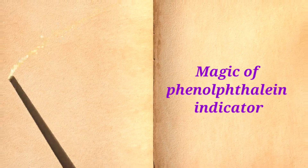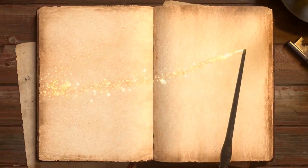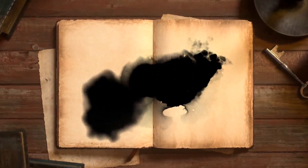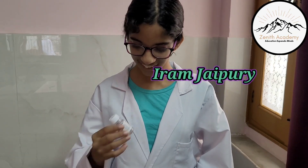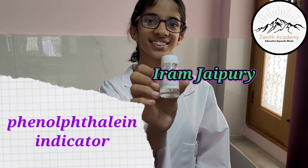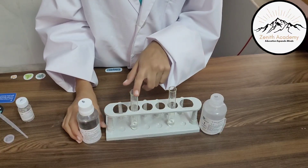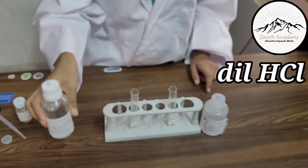Hello students, today we are going to see the magic of phenolphthalein indicator. Phenolphthalein is used to distinguish whether a given solution is an acid or a base. This is Iram Japuri, my daughter, and she'll be demonstrating the phenolphthalein indicator. Here she has taken dilute hydrochloric acid.